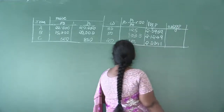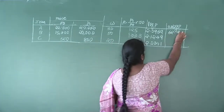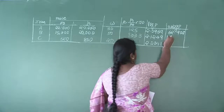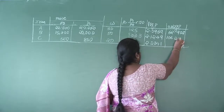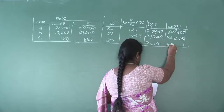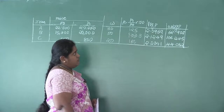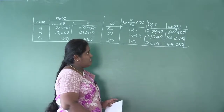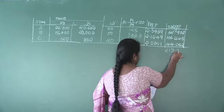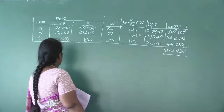Now multiply W × log P. First: 30 × 2.0969 = 62.907. Next: 50 × 2.1249 = 106.245. Then: 20 × 2.2041 = 44.082. Adding all W×log P values: 62.907 + 106.245 + 44.082 = 213.234. This is the total of W×log P. The total of W is 30 + 50 + 20 = 100.